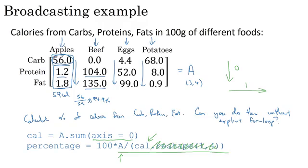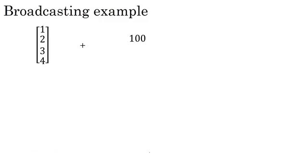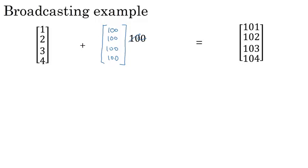Now let's explain in greater detail how this type of operation works. We had a three by four matrix and divided it by a one by four matrix. Let's go through more broadcasting examples. If you take a four by one vector and add it to a number, Python will auto-expand that number into a four by one vector as well. So the vector [1, 2, 3, 4] plus the number 100 ends up adding 100 to every element. We use this form of broadcasting with the constant parameter b in logistic regression, and it works with both column vectors and row vectors.